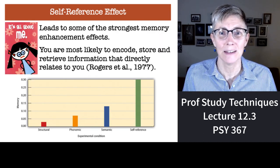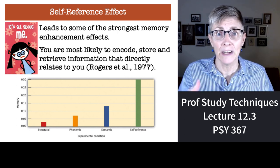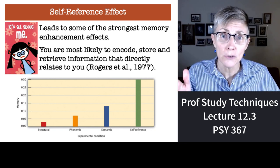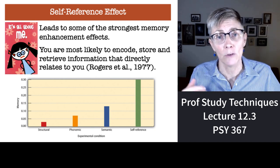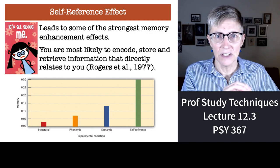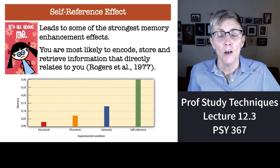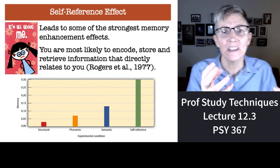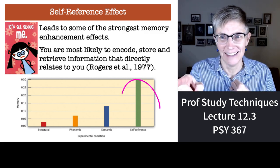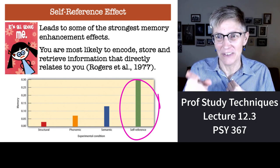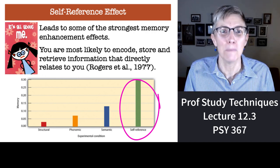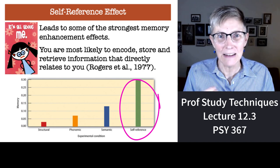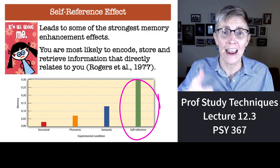Here's another one — the last one from this segment — the self-reference effect. Levels of processing tell us that your ability to remember a list of words depends on how deeply you think about each word. Do you look at the structure of the word, its sound or what it rhymes with, or do you think about its meaning and whether it fits in a sentence? Each of those improves memory. But the biggest bang for your buck is taking a concept and finding an example of it in your own life — relating the material to you. Look at that green bar — that's the self-reference effect. Look how much bigger it is than the other three types of word processing. If you take material and relate it to yourself, make it real in your life, your likelihood of remembering that material goes way, way up.